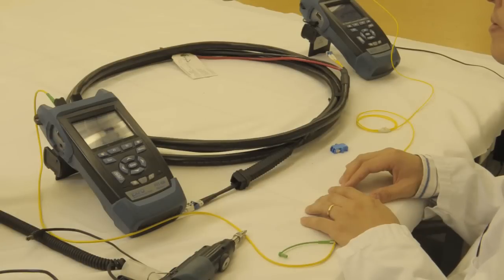And the results: A to B at 1310 is 0.00, B to A is 0.00. For 1550 we're at 0.01 and 0.00. Very good. We're all set to go.